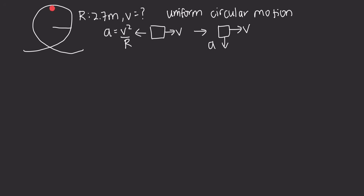For this problem, the acceleration of the ball at the top of the motion is directed downwards — toward the center of the loop, which we'll call O. Drawing a free body diagram at the top of the loop, we have the normal force directed downwards because the track applies a downward force on the ball, and the force of gravity also directed downwards. So our net force and acceleration both point downward.